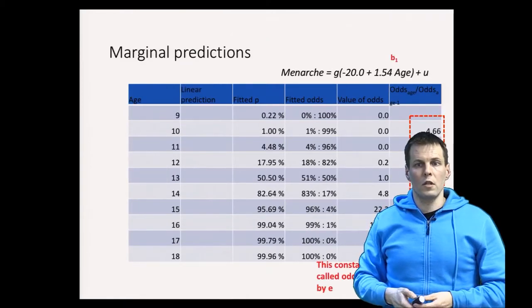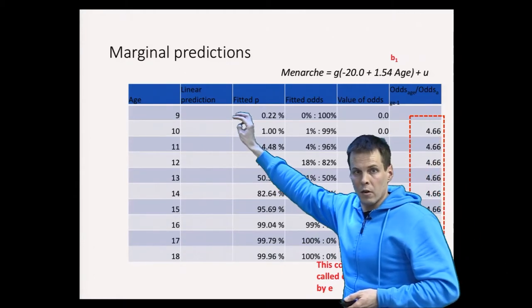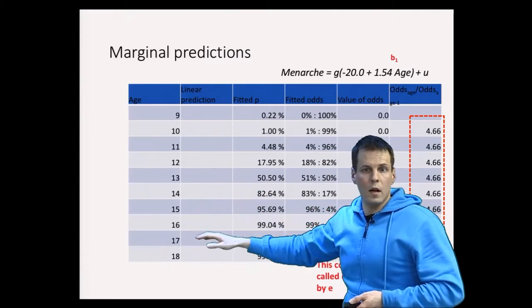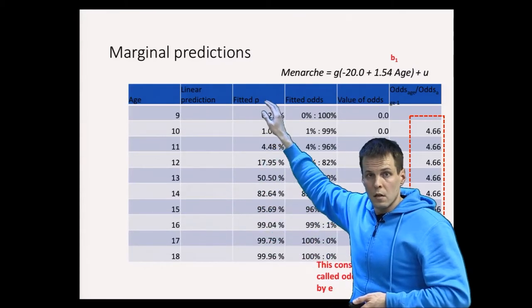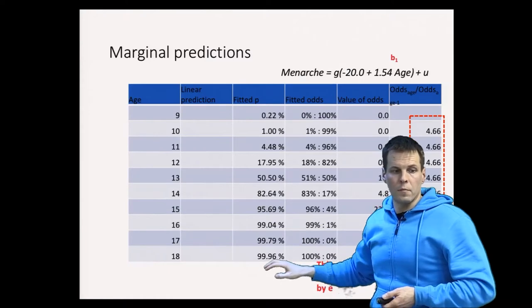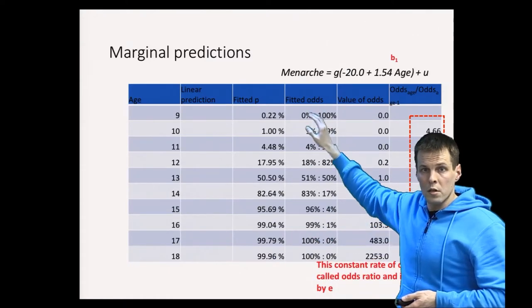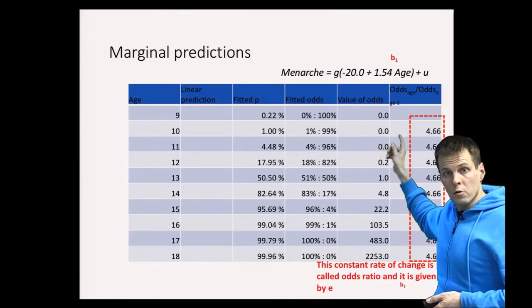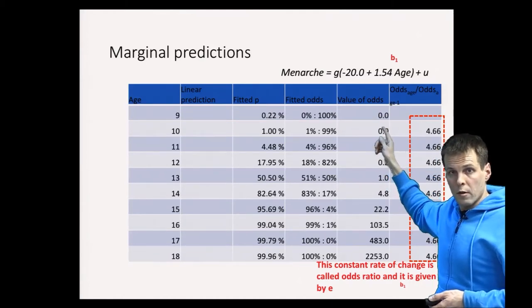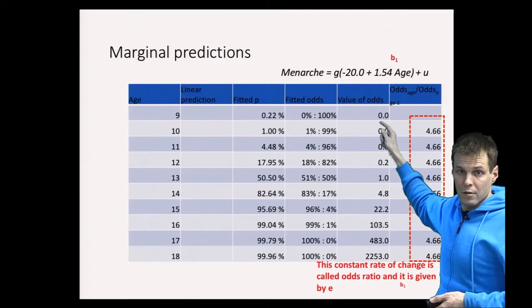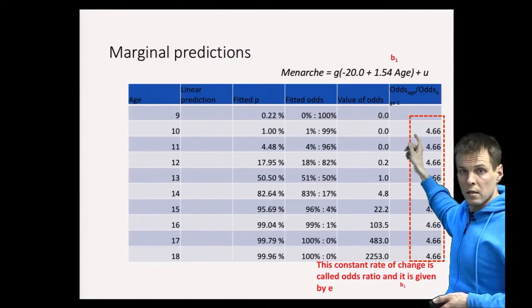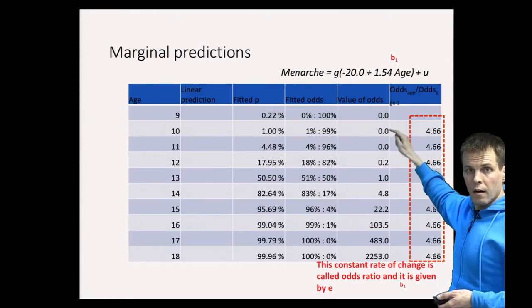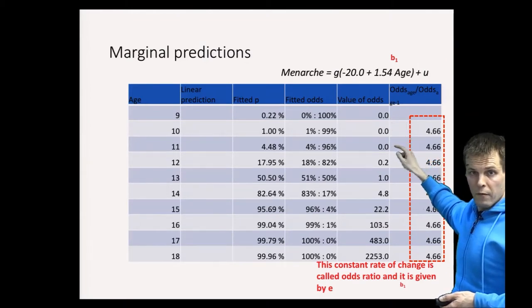And let's calculate marginal effects now for girls at different ages. So instead of using this actual data, we have a hypothetical girl at age of 9, 10, 11, 12, and so on. We calculate the fitted probabilities using our model and we calculate odds. We calculate the value of the odds, and when we compare two odds here, the ratio of these—they are actually not exactly zero—is 4.6. So every time we increase the girl's age by one, then the odds increase by 4.6.